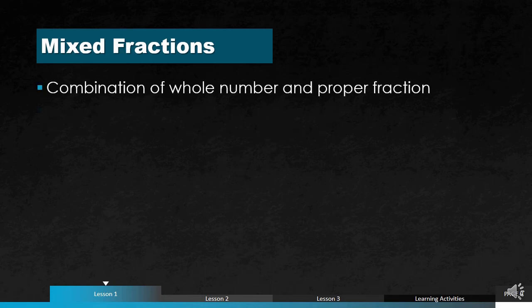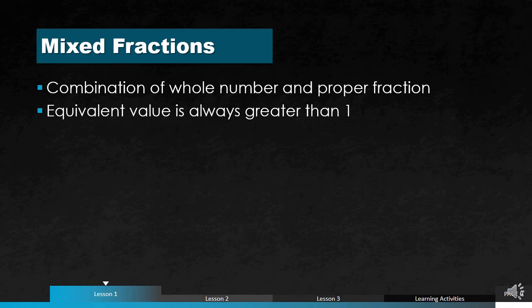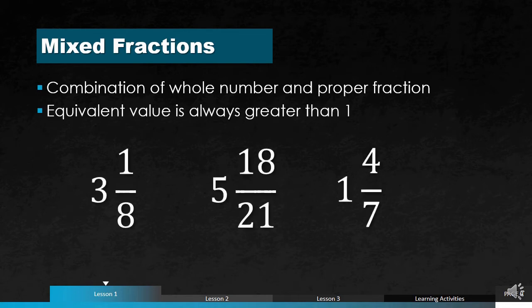Mixed fractions are a combination of a whole number and a proper fraction, and the equivalent value is always greater than 1. For example, 3 and 1 eighths — you have a whole number and a proper fraction. Other examples: 5 and 18 over 21, and 1 and 4 over 7.